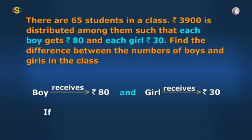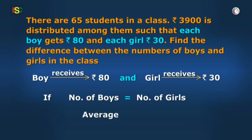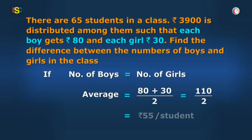Now, if the number of boys is equal to number of girls, then the average money received per student would be 80 plus 30 divided by 2, i.e. 110 by 2 or 55.